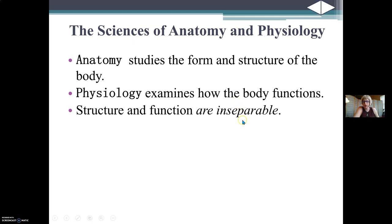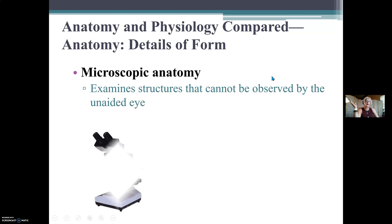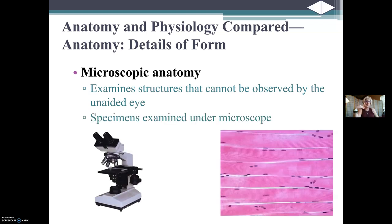Structure and function are inseparable — you can't have one without the other. Anatomy is form, physiology is function. As a heads-up: when you get to A&P 2 it will be more function and less form, but in Anatomy and Physiology One there is a lot of memorization, especially when it comes to understanding and naming the form of the skeletal, muscular, and nervous systems.